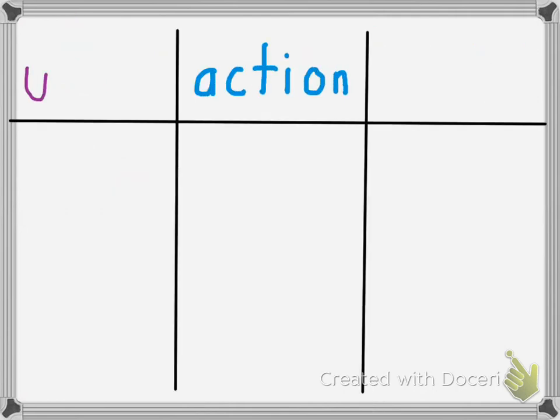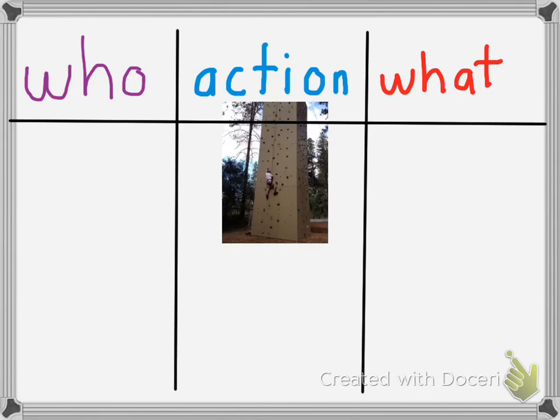All right, so let's see what this looks like. Let's go ahead and make our three-part sentence organized with our who, our action, and our what. And let's take a look at the picture. Ooh, look at that picture. That's a tall tower. It looks like someone's climbing the tower. So I'm going to write a sentence based on this picture.